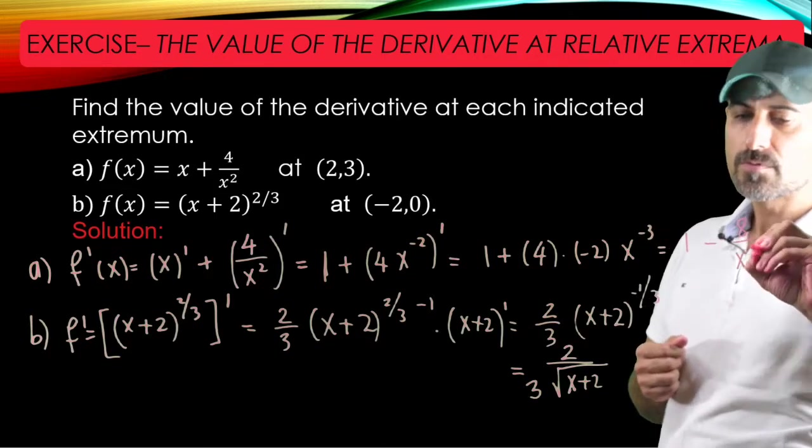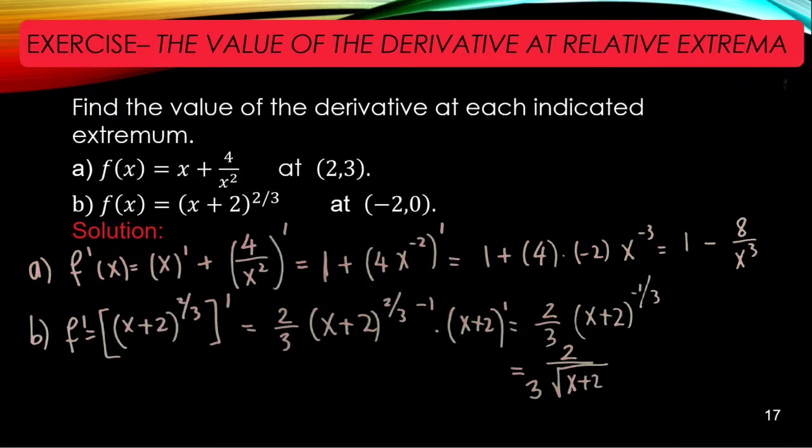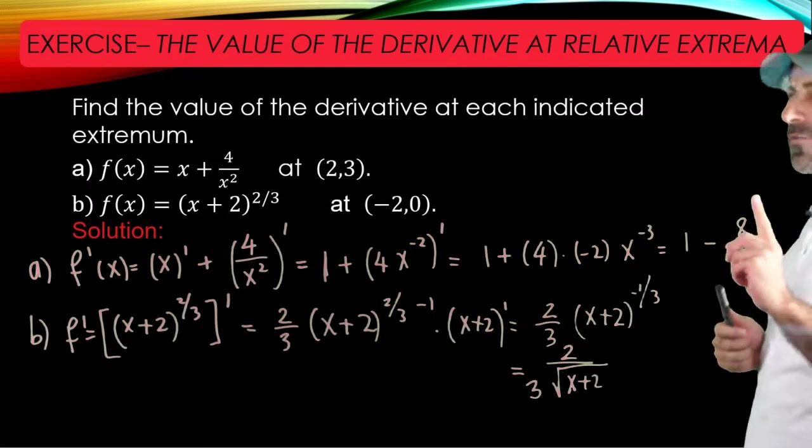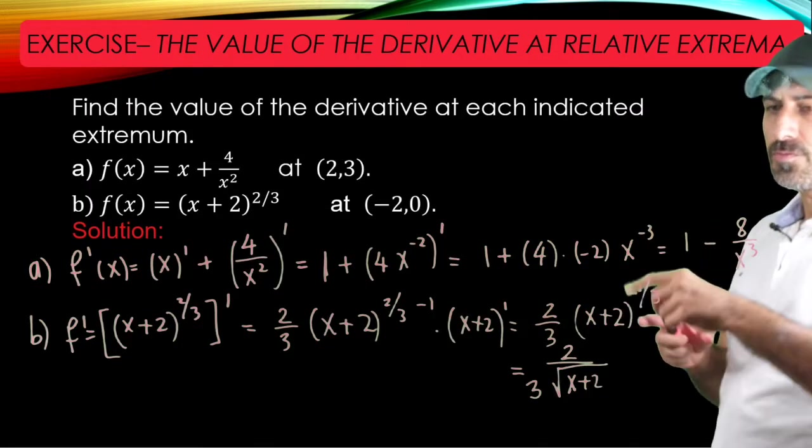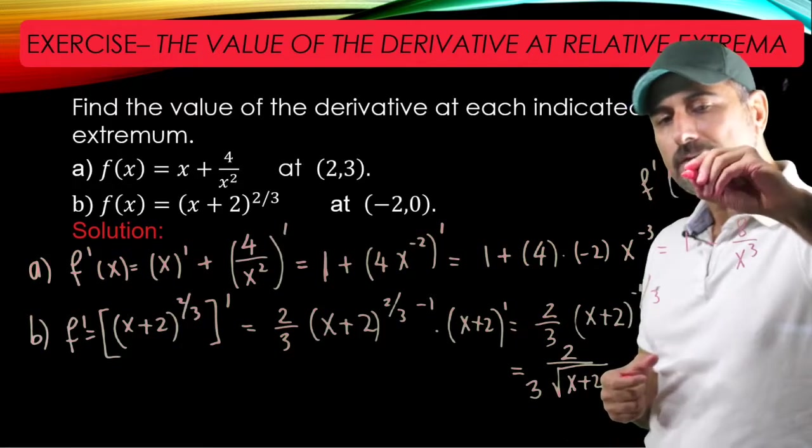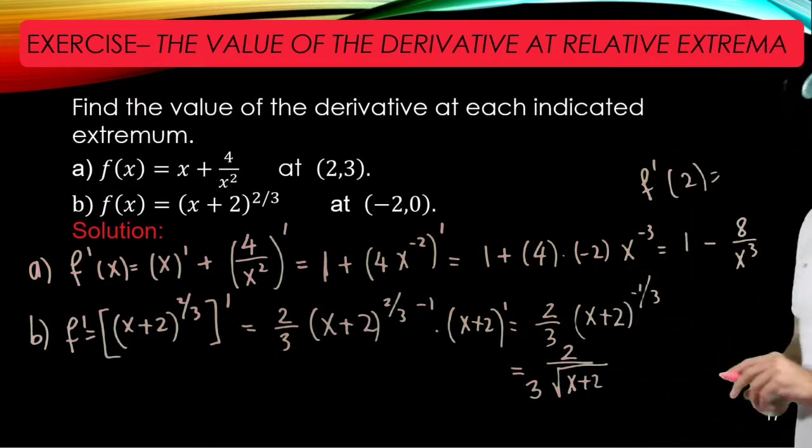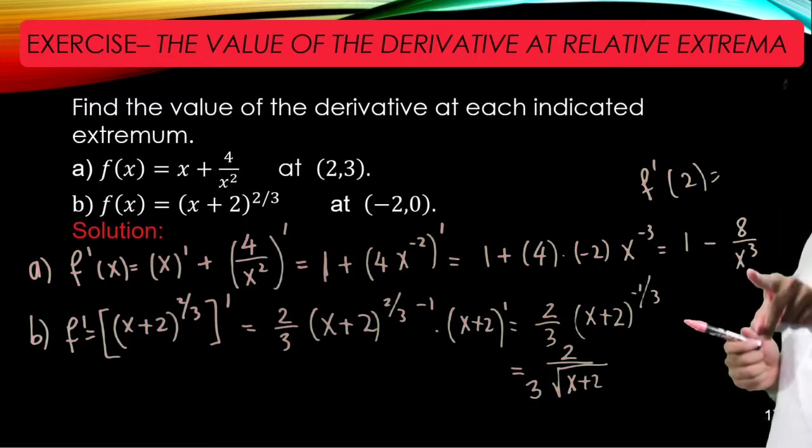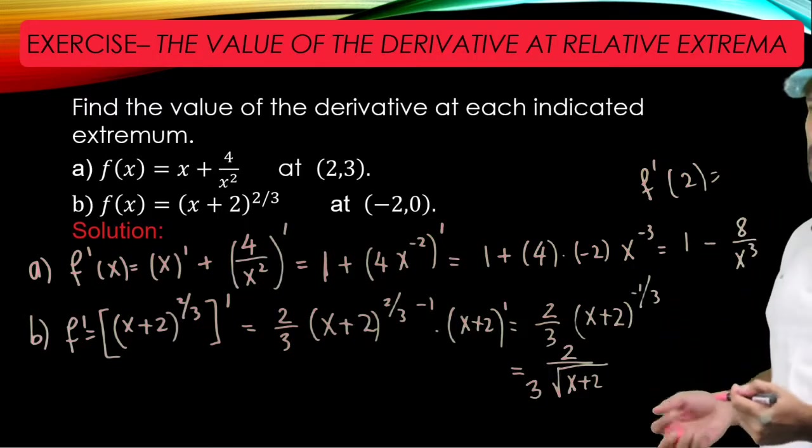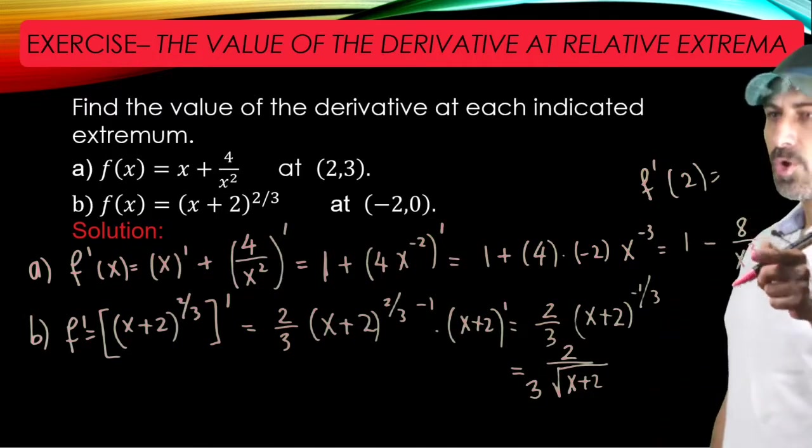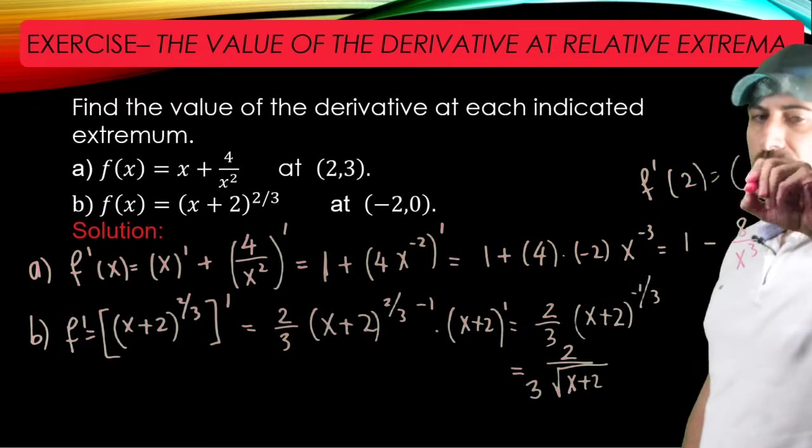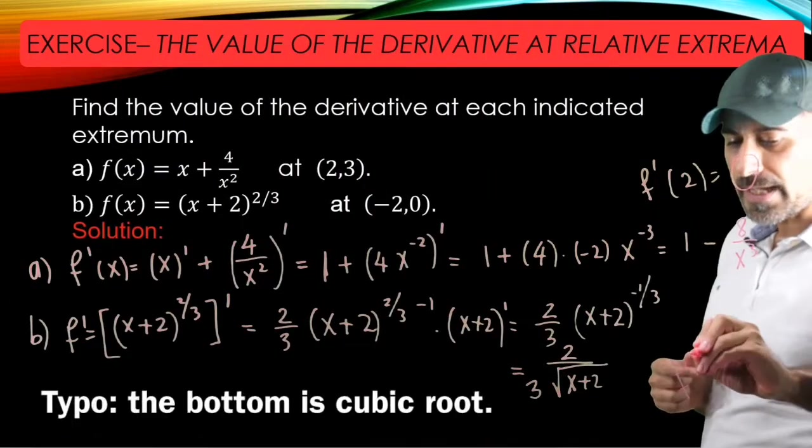Now we want to evaluate this function at 2, so f prime at 2 will be 1 minus 8 over 2 cubed. But 2 cubed is 8, so 8 over 8 is 1. 1 minus 1 is going to be 0.